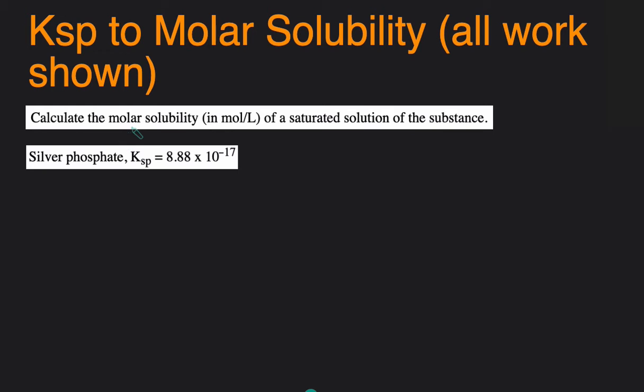We'll go over two example problems where we will have to solve for the molar solubility. In the first one we're starting with silver phosphate and we're given the Ksp. So the very first step is just to write the reaction of how the given solid would dissociate into ions.